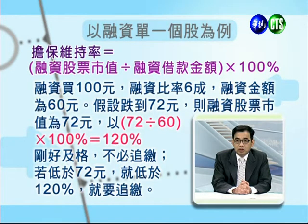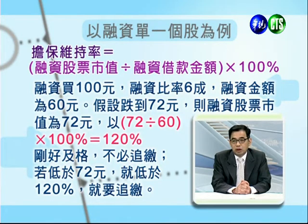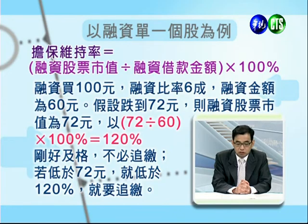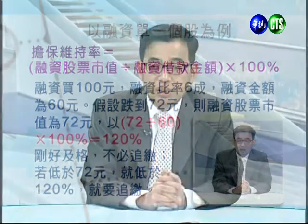单纯只有融资的计算：融资股票市值除以融资款金额乘以100%。例如融资买进一百元，融资比例六成，融资金额六十块；如果这档股票跌到七十二块，把七十二除以六十再乘以100%，融资维持率就是120%，刚好及格不必追缴。如果低于120%就必须要追缴。